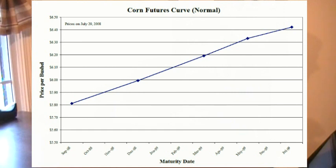Corn is a good example of a normal futures curve. The spot price of corn today is about $5.81 per bushel. This price increases as the maturity date of the futures contract increases. The longest future, which expires in July of 2009, is priced at over $6.40 per bushel.